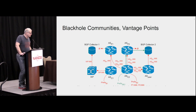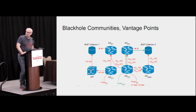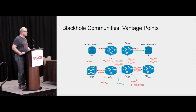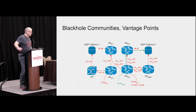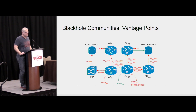Routers aware of the blackhole community might then drop the traffic. For example, AS P2 gets an announcement from prefix B2 with community ASP2:666. It evaluates this community and then simply drops the traffic, whereas another AS in the bottom right corner does not recognize the community and simply propagates the prefix to the collector.